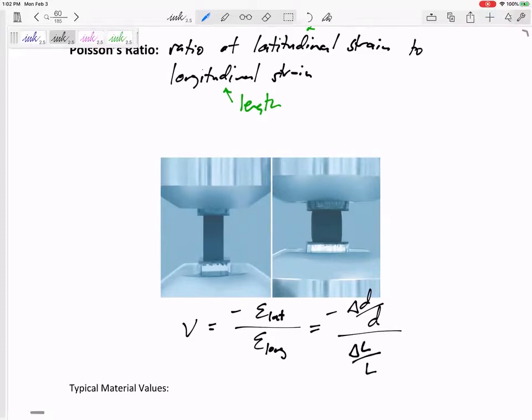You don't get a formula sheet for test one—that's something to memorize. The D's are over the L's, kind of alphabetical order. Change in diameter over diameter, over change in length over length.